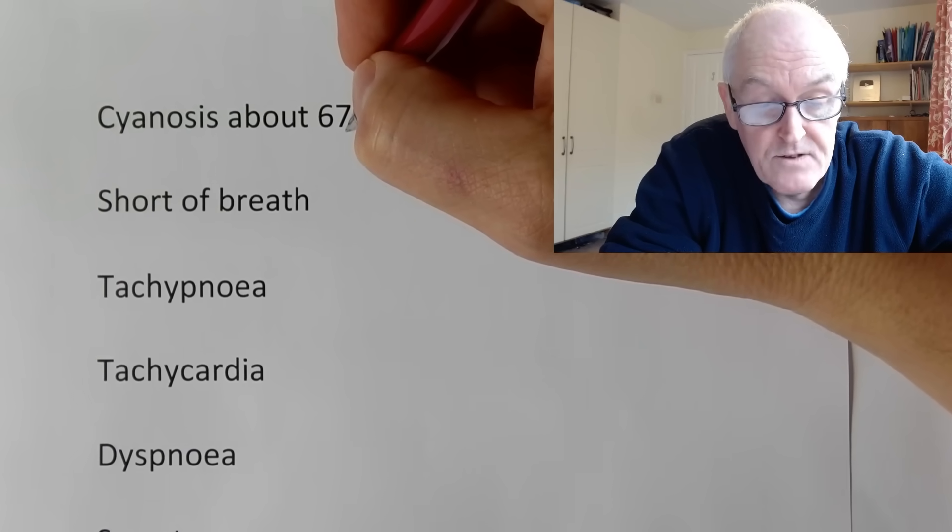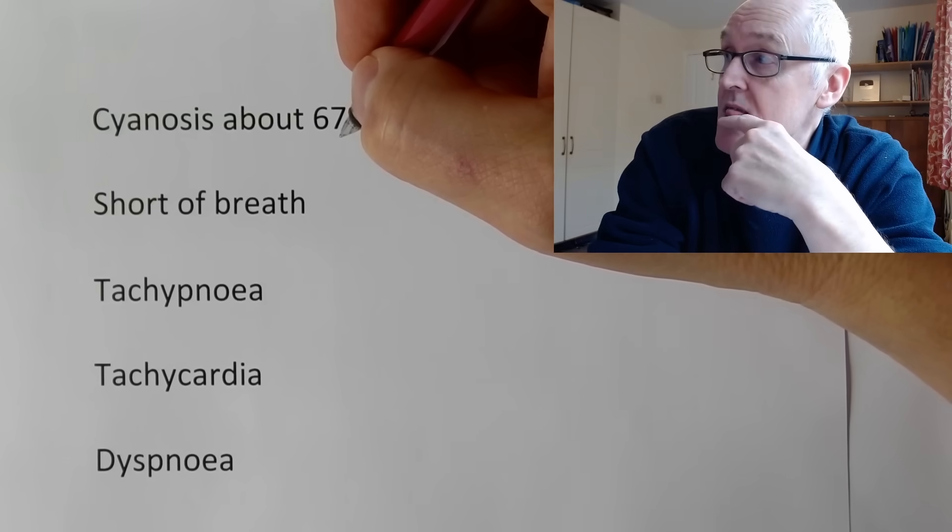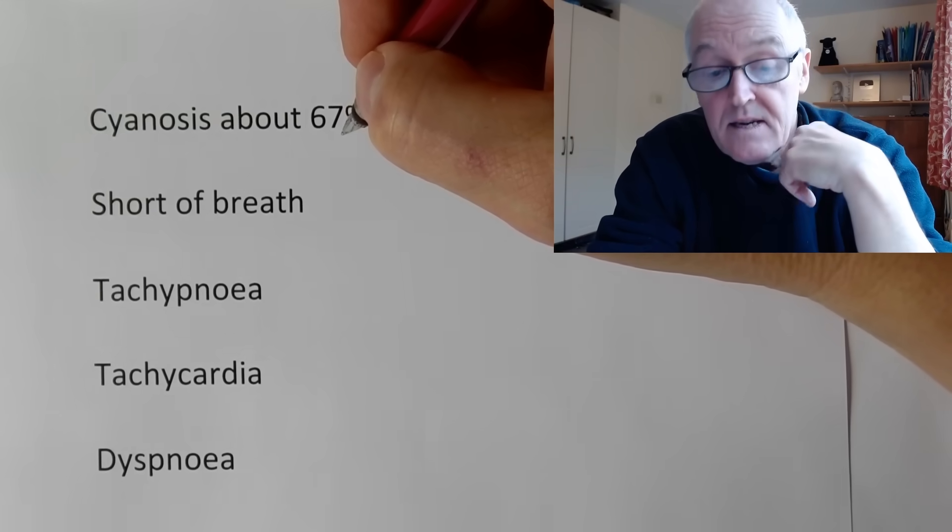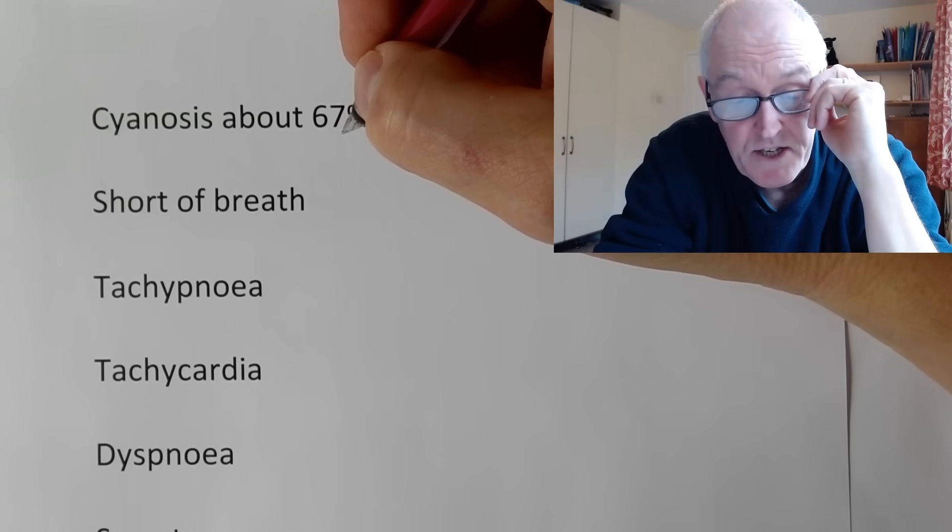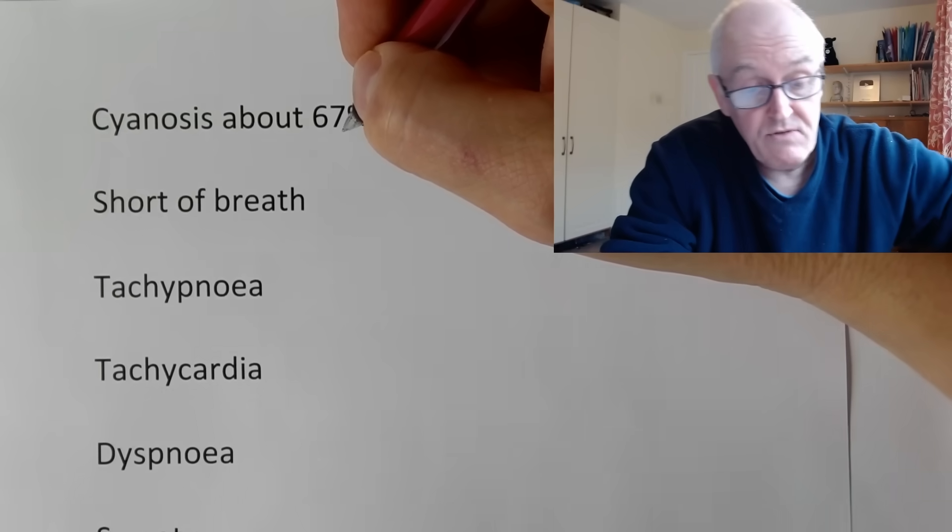If you've got central cyanosis like your lips, neck, chest, tongue, that means your saturations are already actually quite dangerously low.